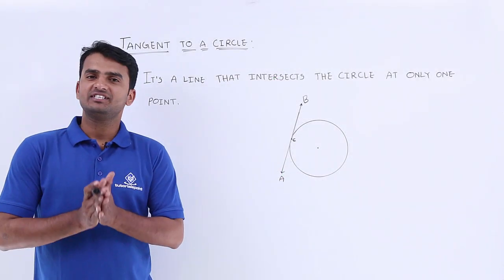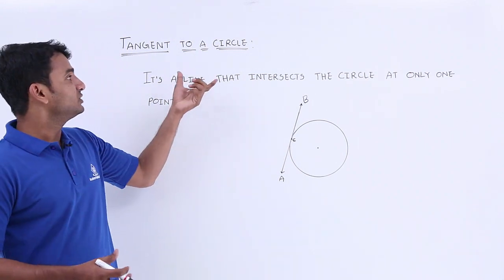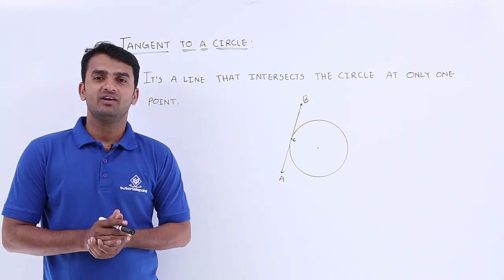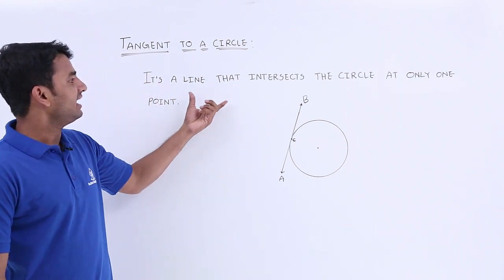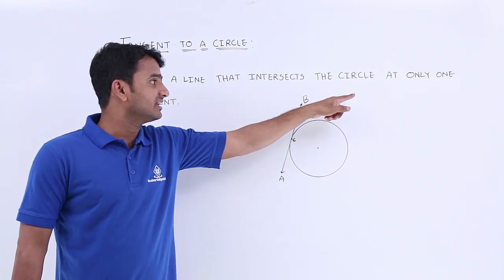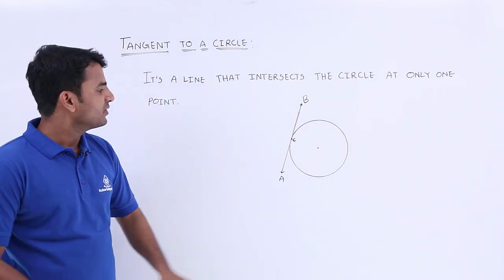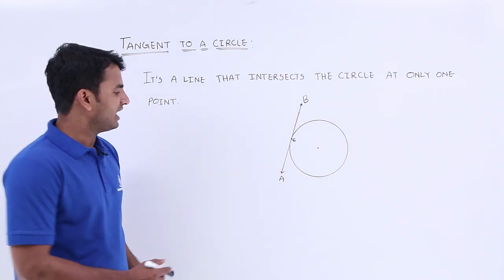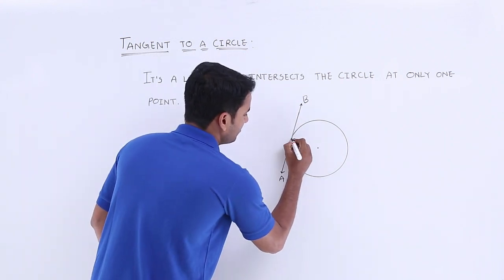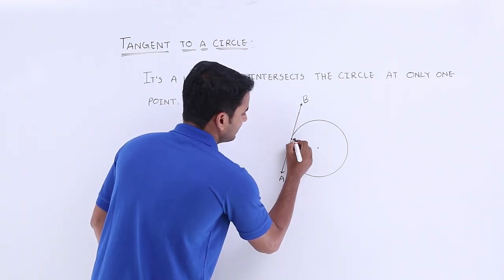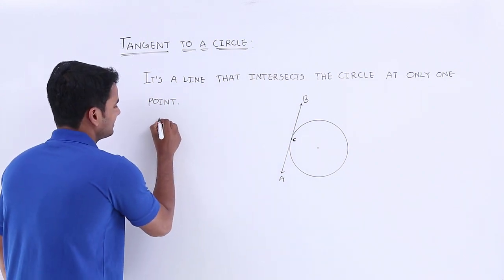In this video we're going to discuss tangent to a circle. A tangent is a line that intersects the circle at only one point. Here we have a circle and a line AB which is intersecting it at only one point, that is C. So AB is considered as a tangent.